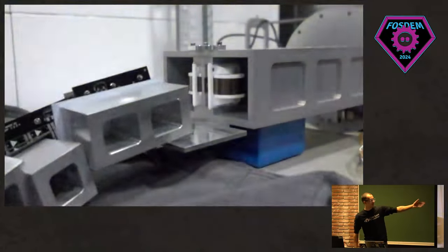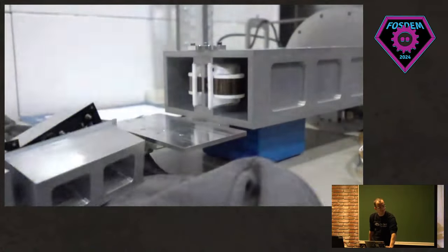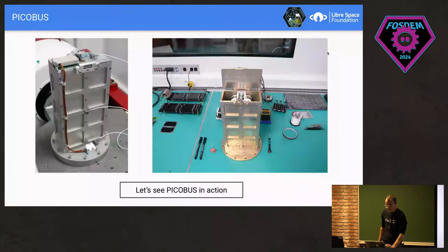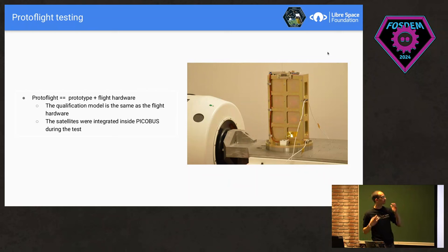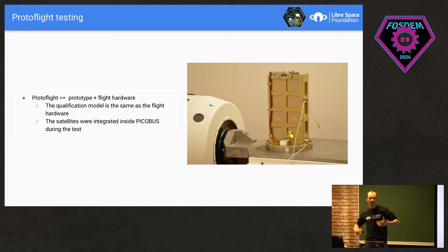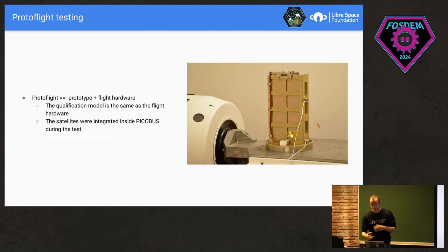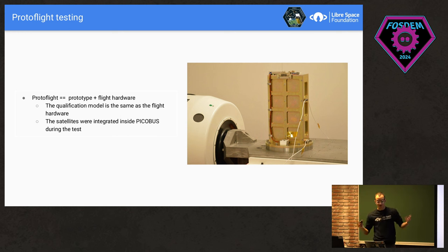You can see the pusher subassembly — it's now reached the top. Moving on, I want to share some slides about the testing we do and how you space-grade an assembly. One of the things we do is called protoflight testing — protoflight comes from prototype and flight hardware. When building the PicoBus, we had a really short period of time — six months — to do everything, including building the two satellites inside. Protoflight helps you develop quickly. The qualification model that goes through vibration testing is the same as the flight hardware, and the satellites were integrated inside the PicoBus during the protoflight campaign.